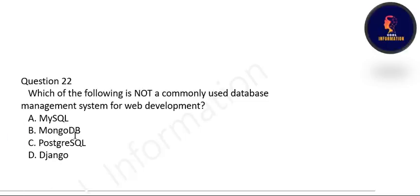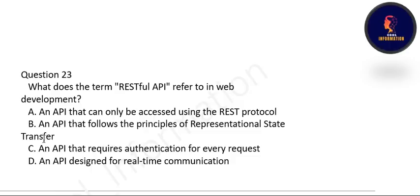Which of the following is not a commonly used database management system for web development? MySQL, MongoDB, and PostgreSQL are all commonly used DBMS for web development. Django is not a DBMS, so option D is correct.